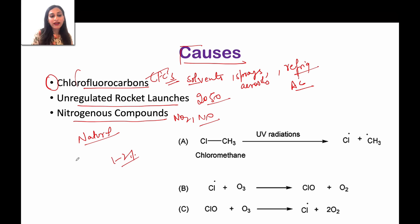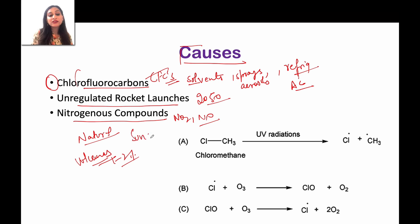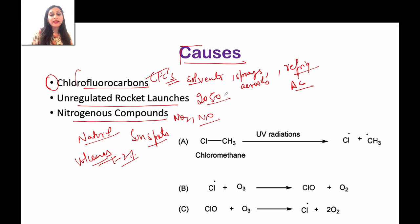There are also some natural causes, but natural causes account for only about 1–2% of ozone depletion — like volcanoes, stratospheric winds, or sunspot phenomena. Any compound that releases chlorine, bromine, or other chemical compounds that deplete ozone is considered an ozone-depleting substance.